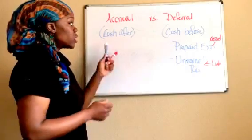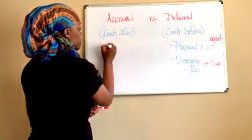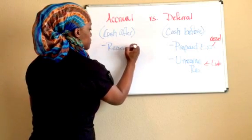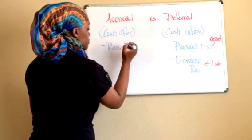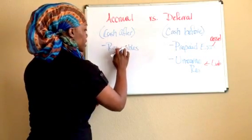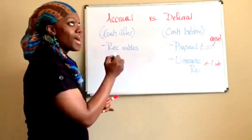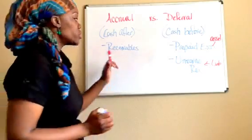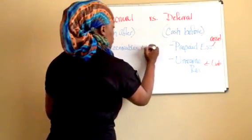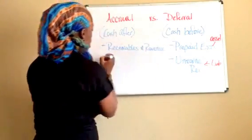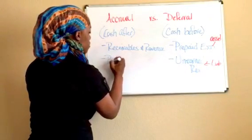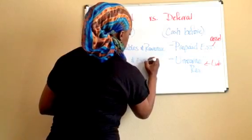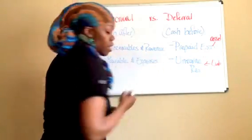So over here under the accrual method, the thing that we kind of keep in mind is these are going to be where our receivables are going to be when we're talking about revenue. And then also we're going to have our payable when it comes to expenses.